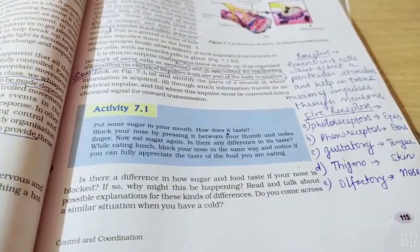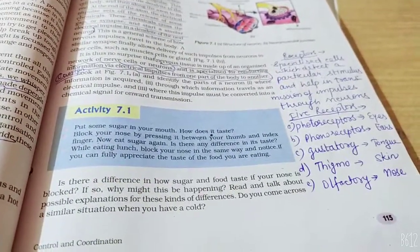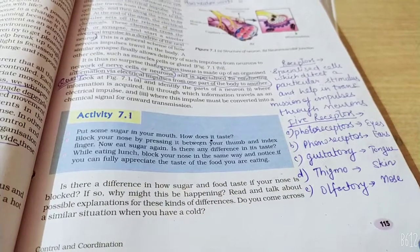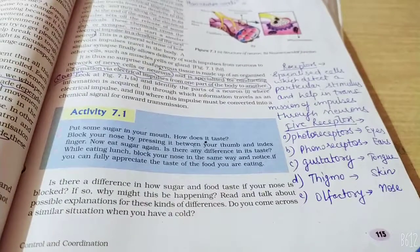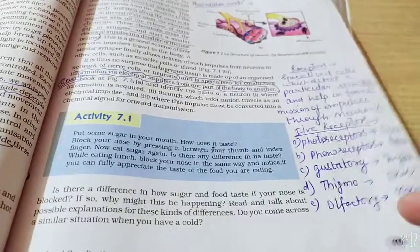After that, there is an activity. If you put some sugar in your mouth, how does it taste? Taste buds are in the tongue. You have to know that they are gustatory receptors. They will tell you how the taste is.